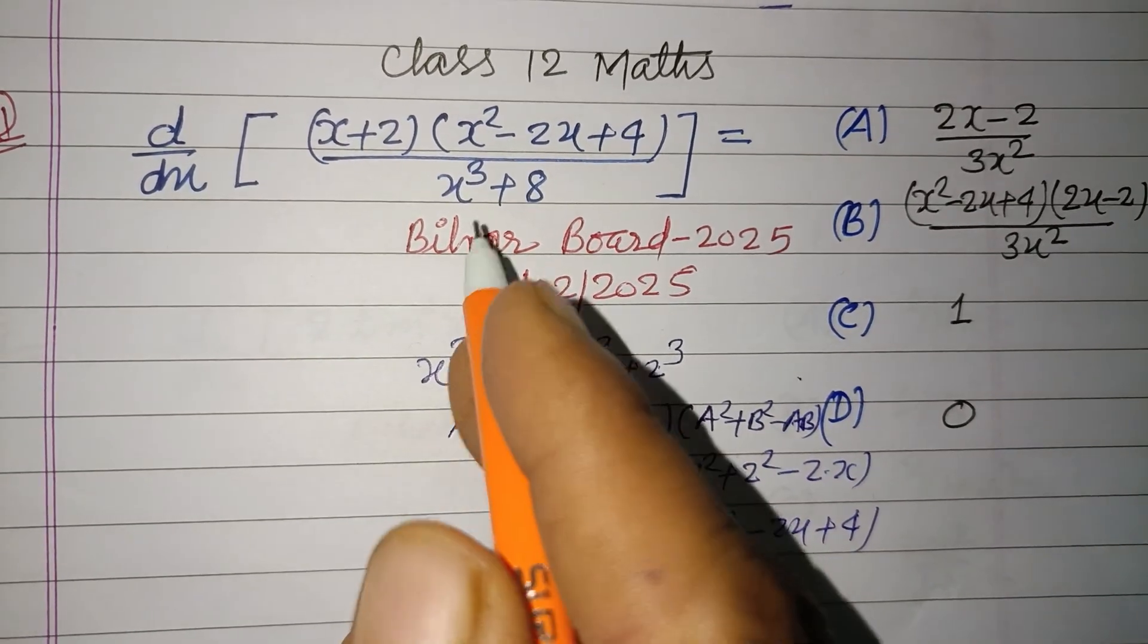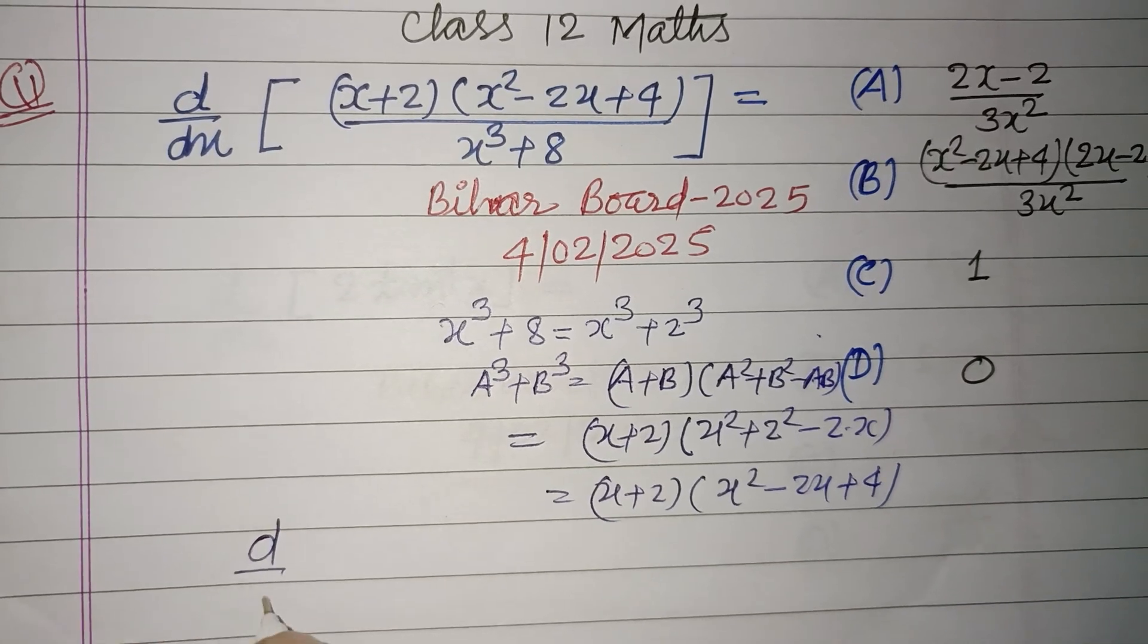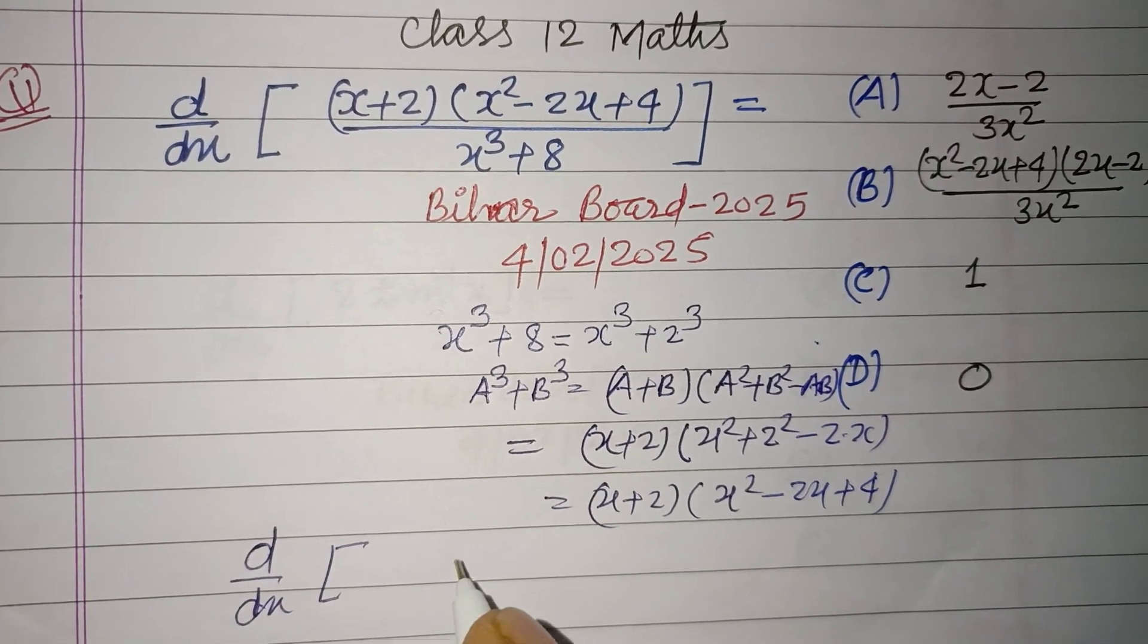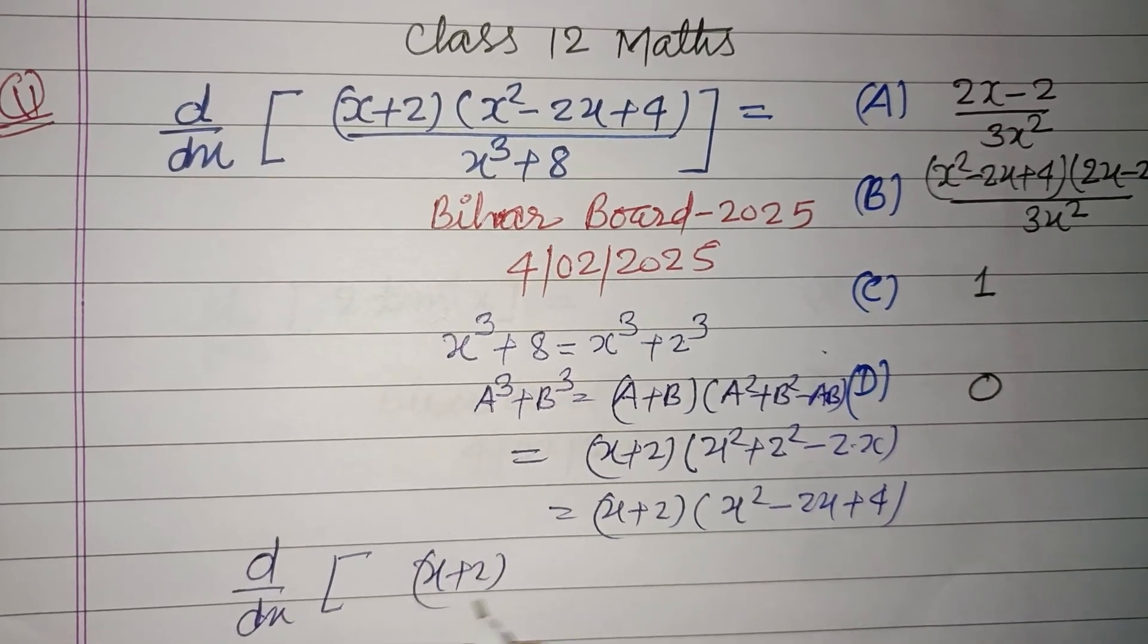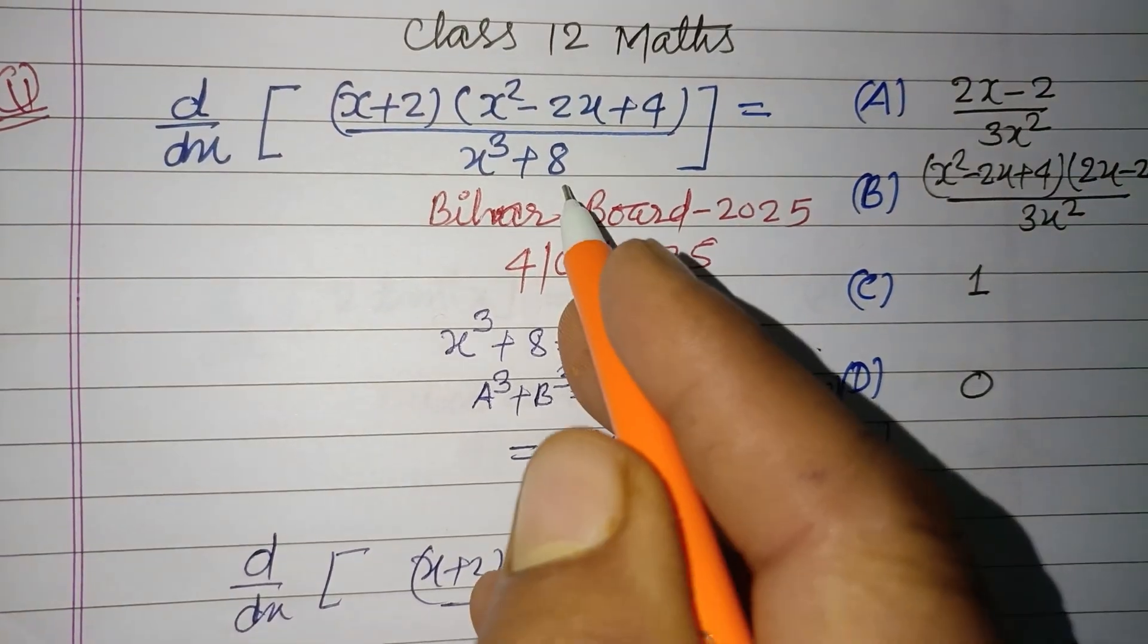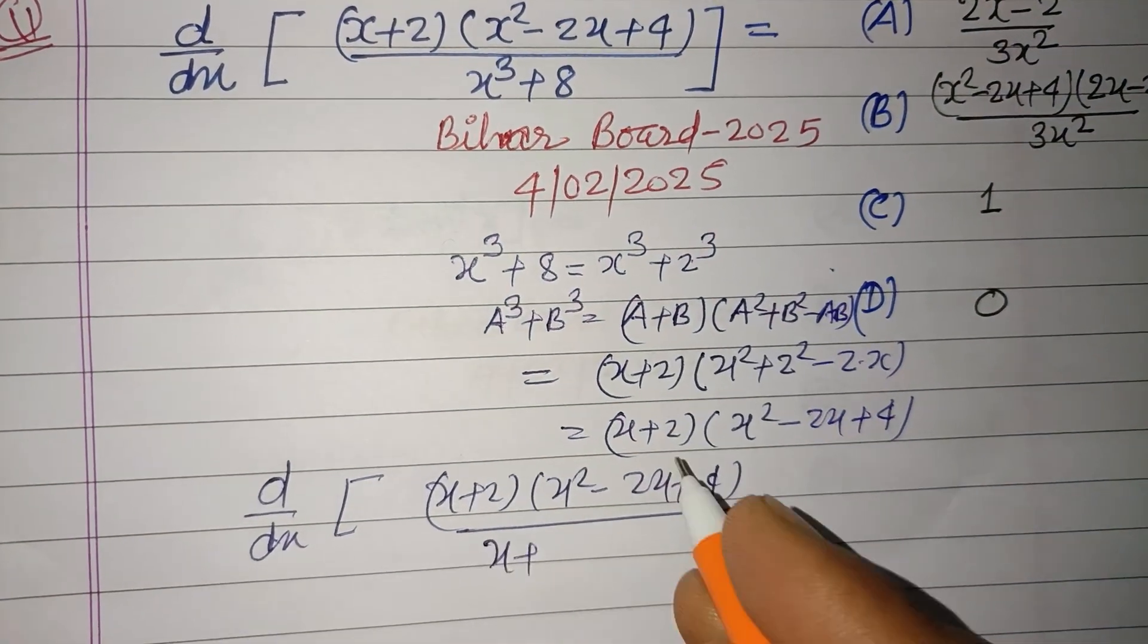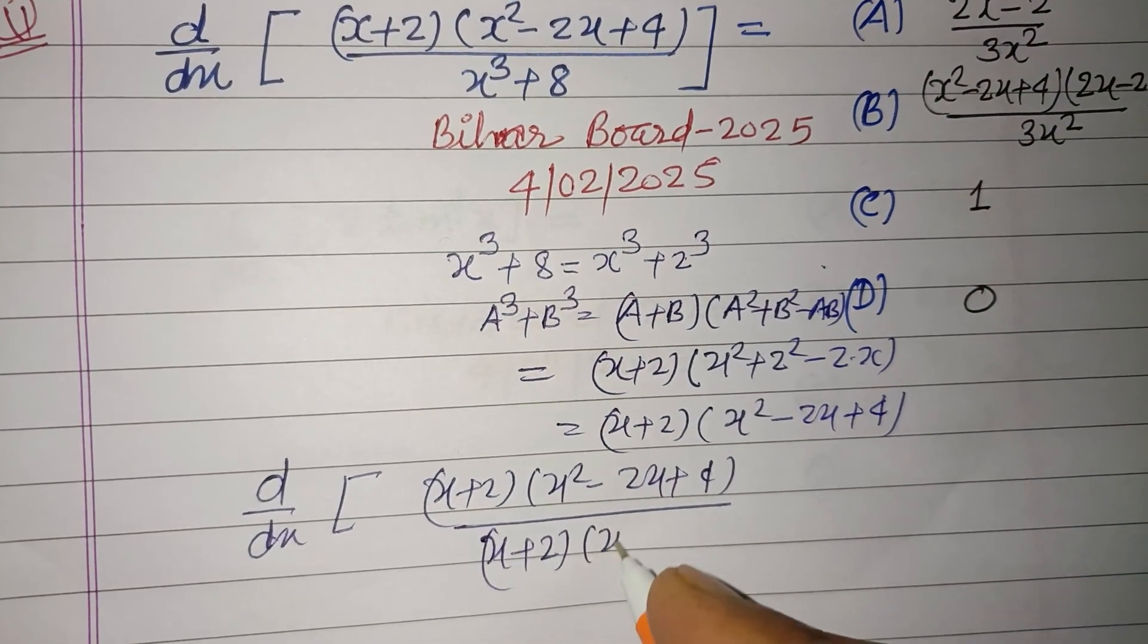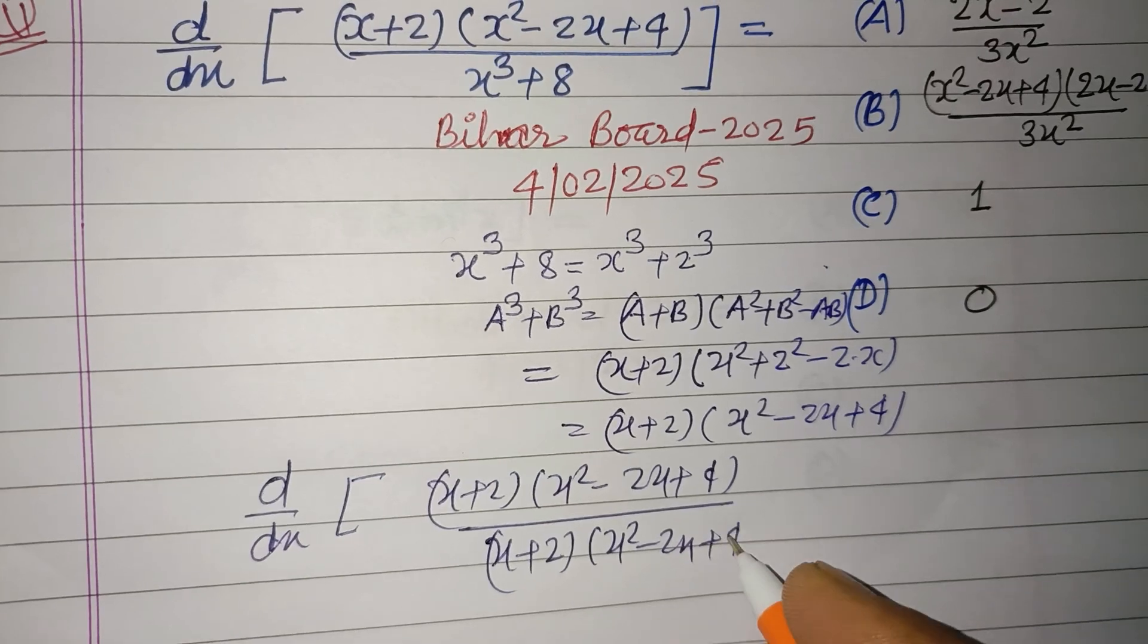Putting this d/dx: (x+2)(x²-2x+4) upon, factorizing this which is (x+2)(x²-2x+4).